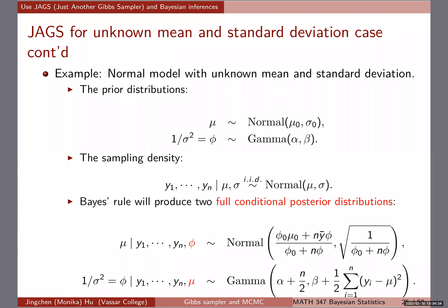Let me show you why using JAGS is much easier in a lot of ways. This is the stuff we did last time. We assumed that the normal sampling model has unknown mean and unknown standard deviation, so we gave a joint prior — an independent prior for mu and phi. Then we have the sampling density, and eventually we derived the full conditional posterior distributions: the first one for mu, the second one for phi, and then we wrote a big loop to make it run.